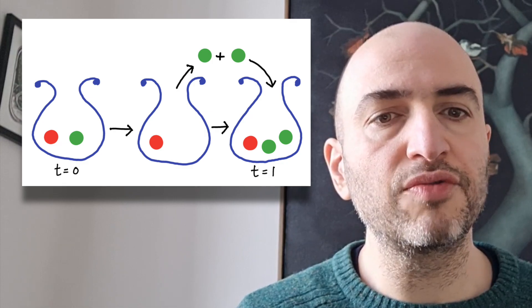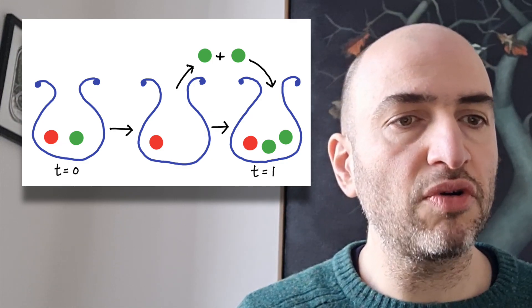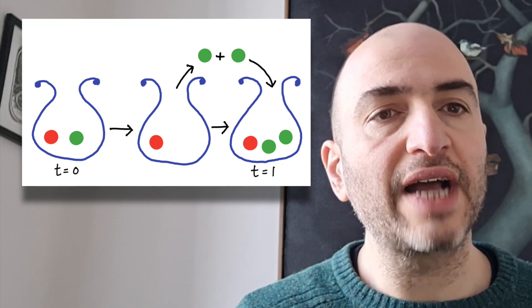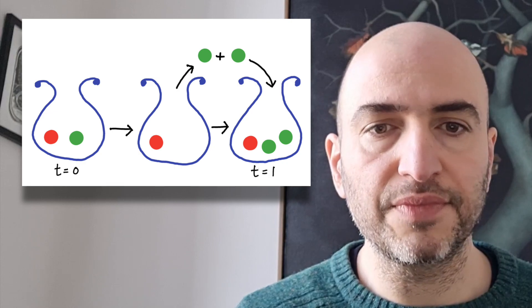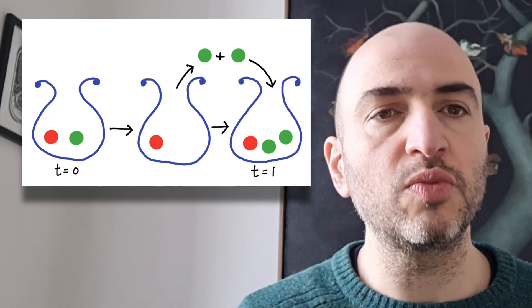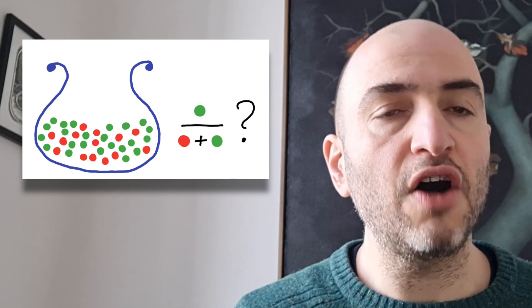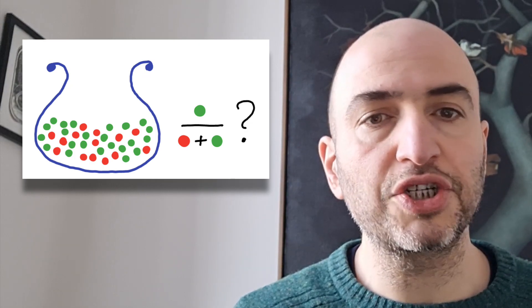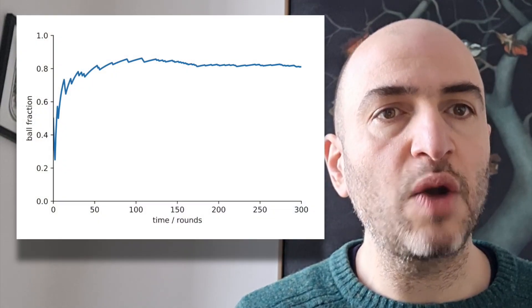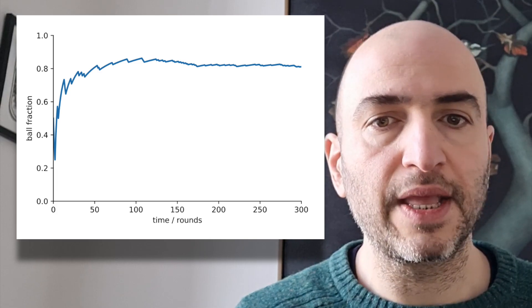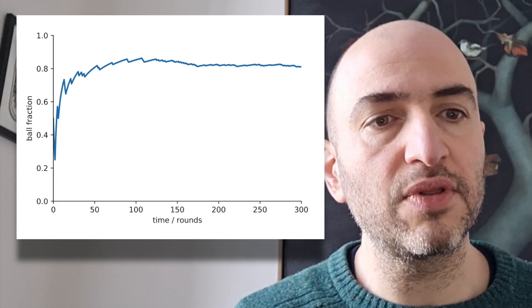Now I want to give some examples of where we break ergodicity. The first example is Polya's urn, which is a game. We have an urn with a red and a green ball in it initially, and we draw one of the balls. Whichever ball we draw, we add another ball of the same colour to the urn. So here in the next round, we will draw from an urn which contains two green balls and one red ball. And the question we want to ask is: after many rounds of the game, what is the fraction of green balls to total balls? So we run this game once, and we get a trajectory that looks like this. We start at a ball fraction of 0.5 and we end at a ball fraction of around 0.8.